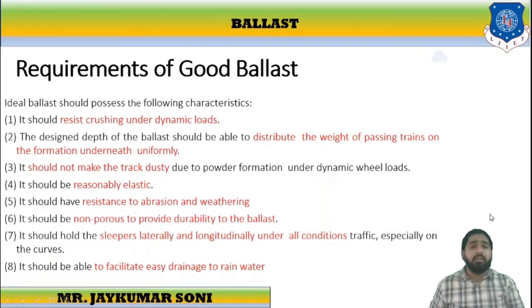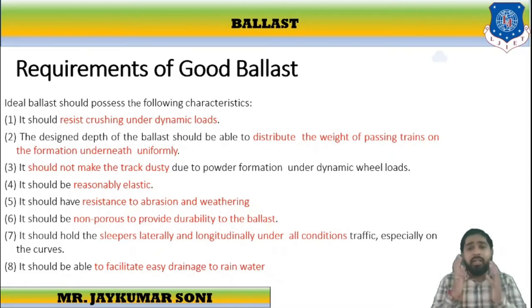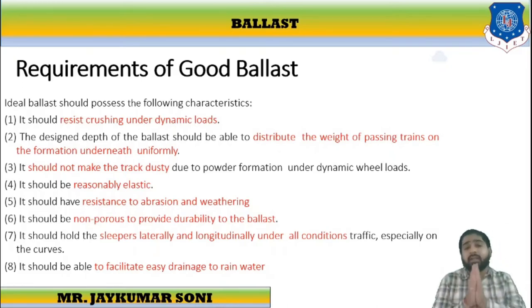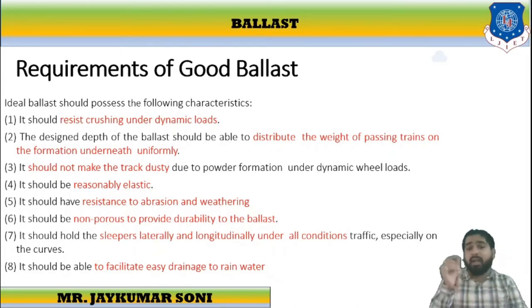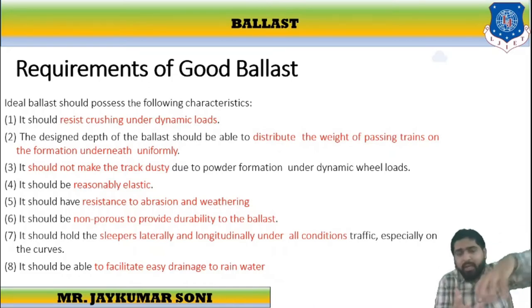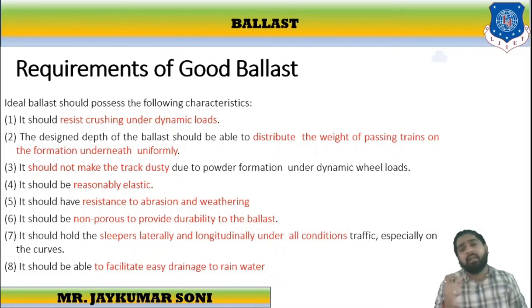What are the requirements of good ballast? First, it should resist crushing under dynamic loads. It should distribute the weight of passing trains on the formation underneath uniformly. It should not make the track dusty. It should be reasonably elastic. It should have resistance to abrasion and weathering. It should be durable and non-porous. It should hold the sleepers laterally and longitudinally under all conditions, and it should facilitate easy drainage of water to reduce water accumulation on the railway track.